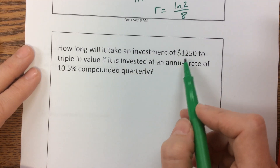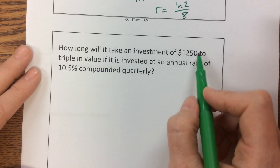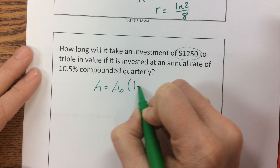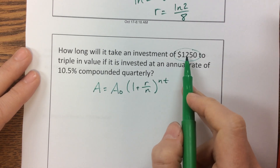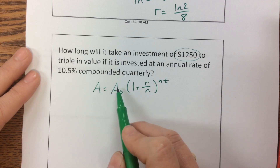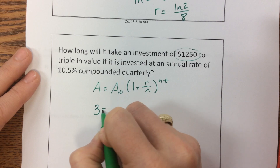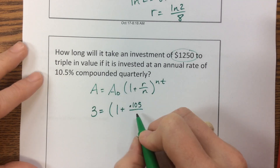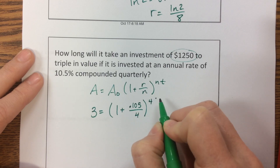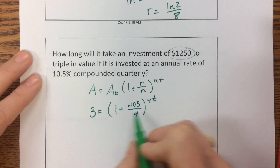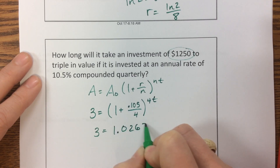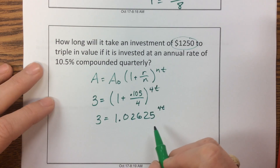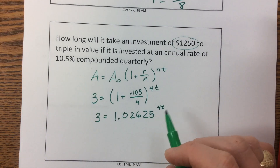Last one: how long will it take an investment to triple? It's compounded quarterly. Since the investment triples, that value is three times as big as the initial, so I just write 3 equals 1 plus 0.105 divided by 4, raised to the 4T. I have a rate of 10.5%, converted to a decimal, compounded four times a year. This becomes 1.02625 raised to the 4T. Now I take the log of both sides — go check the rest of the notes to see the final answer.